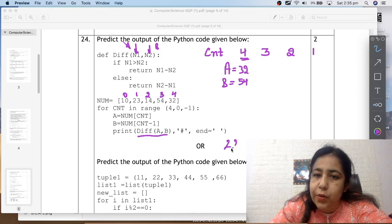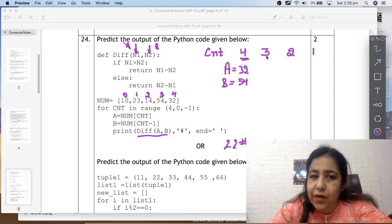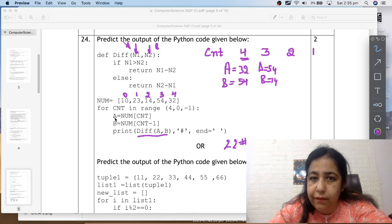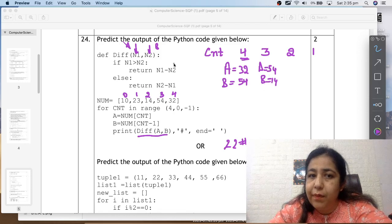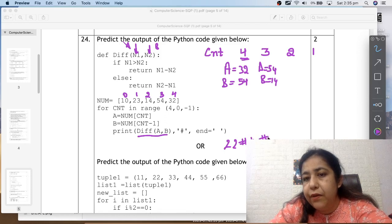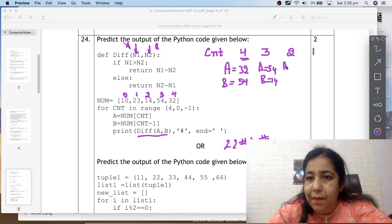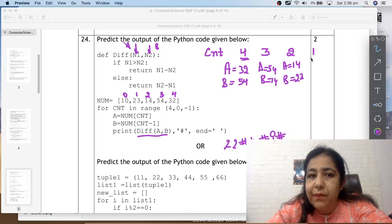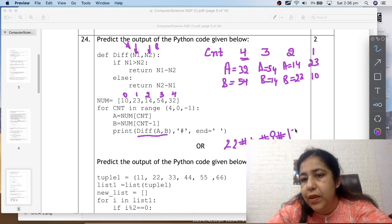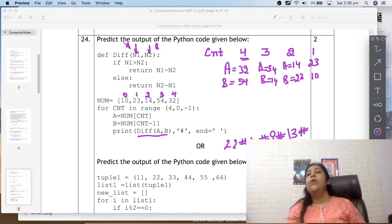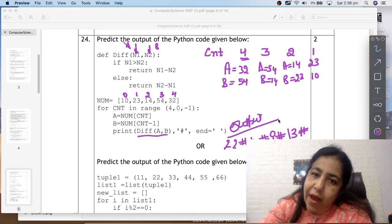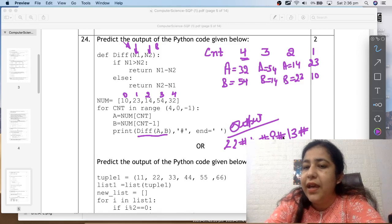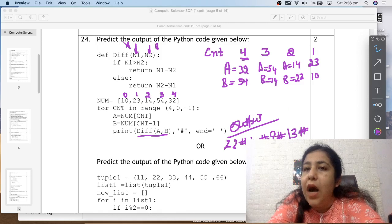So 22 will return. It will print 22 hash. Then cnt becomes 3. This time a will be 54 and b will be 14. Because cnt is 3. So num cnt is 54 and the next one is 14. So 54 minus 14 will happen here. That will be 40. It will return and print 40 hash. When it becomes 2, you will have 14 in a and 23 in b. So the difference between the two is 9. So it will print 9 hash. Then when it becomes 1, here is 23 and here is 10. So the distance between the two is 13. So 13 hash. That is it. Loop is finished. So your output is this. So we have to write in the answer: 22 hash, 40 hash, 9 hash, 13 hash.